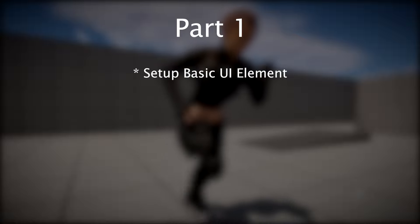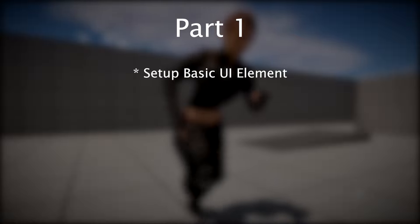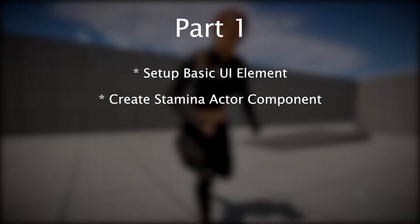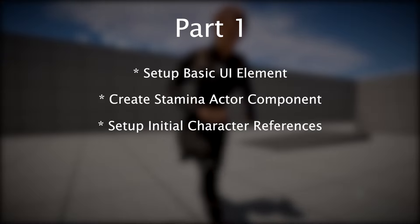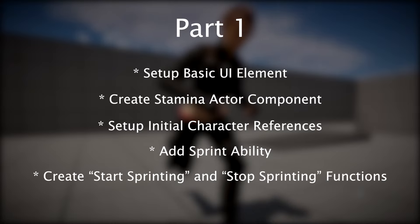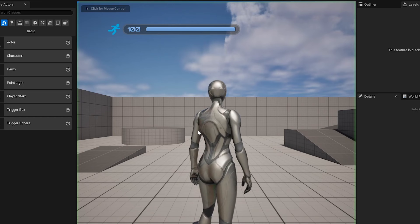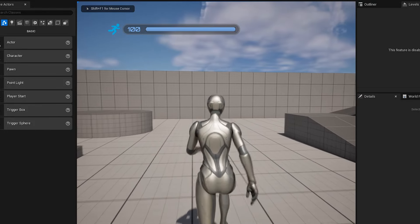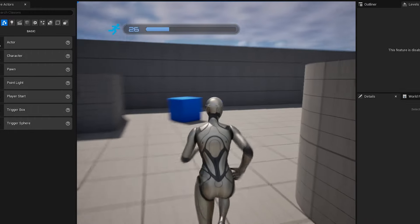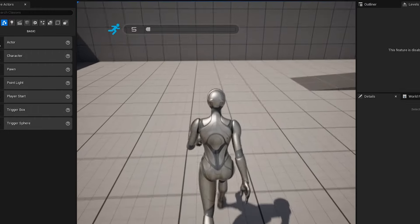The tutorial will be divided up into three parts. In part one, we'll cover setting up a basic UI element so that we can get visual feedback of when the character's stamina drains or regenerates, creating the stamina actor component and attaching it to our third person character, setting up our initial character references, adding a sprint functionality to our character, and finally creating a start sprinting function and a stop sprinting function. If you'd like to get access to the project file for this YouTube tutorial, you can download the UE 5.4 project file completely for free from my Patreon.